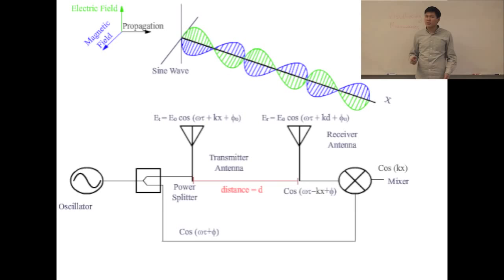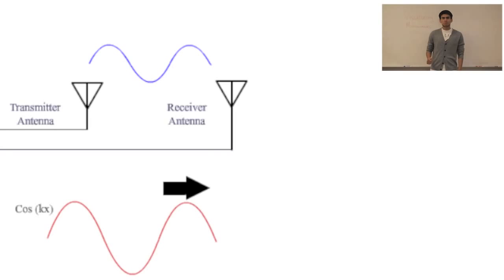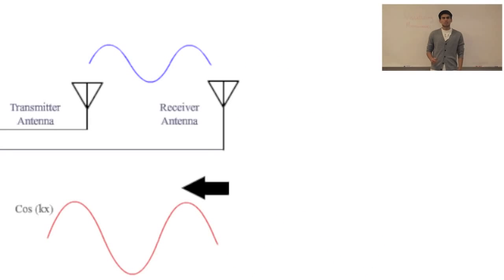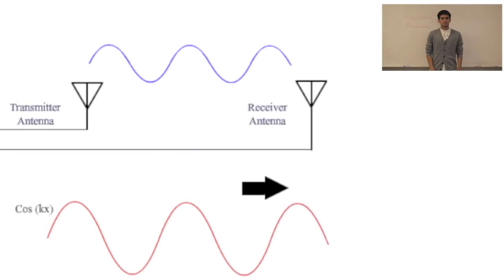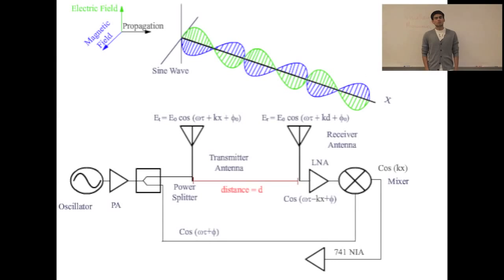As we can see, the output of the mixer is dependent on the phase, which in turn follows the amplitude variation of the transmitted electromagnetic wave in space. Also, as electromagnetic waves propagate through space, the field intensity becomes smaller according to the inverse of the distance propagated squared. We also use both RF and baseband amplifiers to make the signal strong enough to be observed.